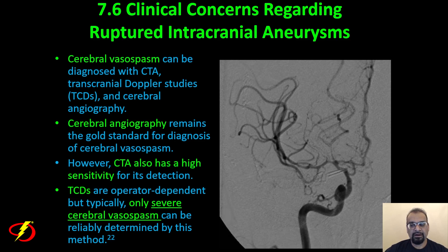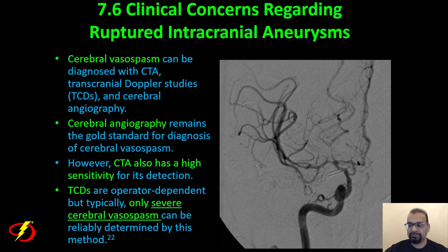Transcranial Dopplers are operator dependent and typically only reliable for detecting severe cerebral vasospasm. On angiography, vasospasm anatomy can be reviewed: the distal carotid artery, ophthalmic artery, supraclinoid segment, A1 segment of the anterior cerebral artery, M1 segment of the MCA, and M2 segments including superior and inferior divisions. In this example, vasospasm is visible in the right supraclinoid ICA, right A1, right M1, and proximal right M2 superior division.